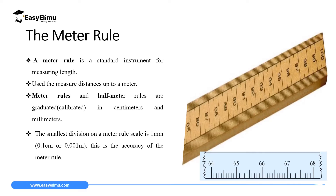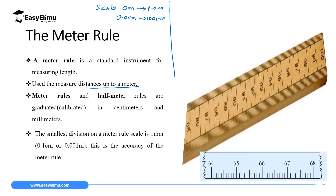A meter rule is a standard instrument for measuring length, and this instrument can only be used to measure straight distances up to 100 centimeters. This means the scale ranges from 0.0 centimeters to 100 centimeters, because one meter is the same as 100 centimeters. Another important thing to note is that this instrument is calibrated in centimeters and millimeters.